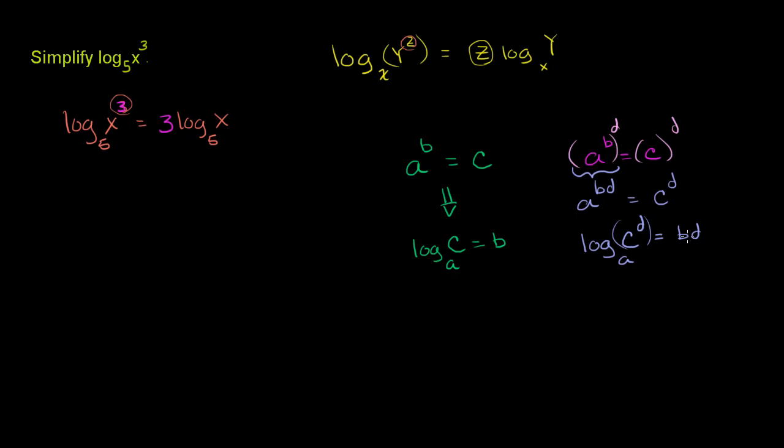But what is b? We already know b is this thing here. If we substitute this in for b, and rewrite this as db, we get logarithm base a of c to the d-th power equals bd, or db if you switch the order. That's d times b, where b is log base a of c.